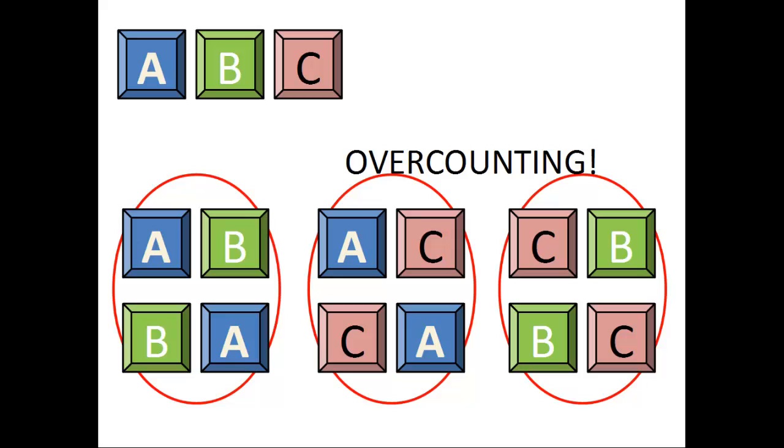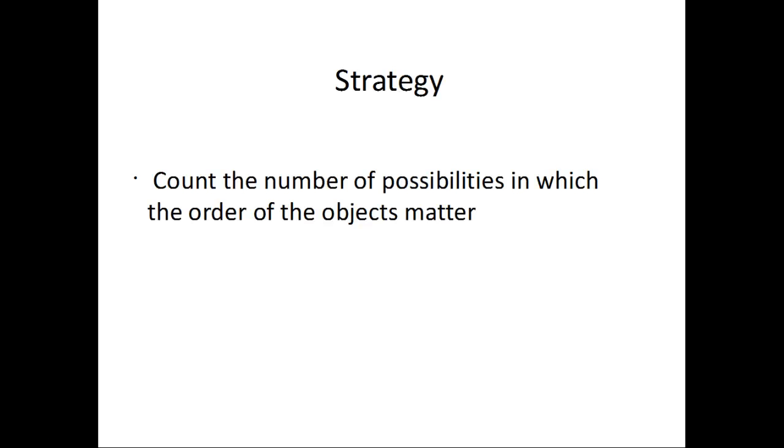Alright, let's recap the strategy we just used. First, we counted the number of overall possibilities. Then, we accounted for over-counting, saw how many times we over-counted each possibility, and then divided our initial count by this number.